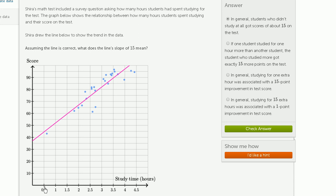This student right here spent about 0.6 hours studying and didn't do too well on the exam. Looks like they got a 43 or 44. This student over here spent almost 4 and a half hours studying and got a 94, close to a 95 on the exam.